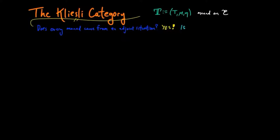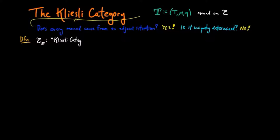However, is it uniquely determined? Here the answer in general is no. In this section we look at a different construction of how to obtain an adjoint situation from a given monad T. This construction is called the Kleisli category, which we denote by E subscript T.